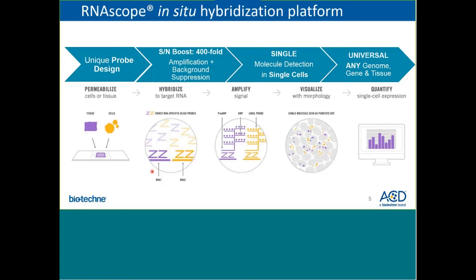The application of the tissue to the section is followed by a hybridization step, which includes hybridization of a pool of about 20 target-specific so-called double Z probes. These double Z probes target RNA and then allow for the amplification of hybridization signals via sequential hybridization of amplifiers and label probes, resulting in detection of single messenger RNA molecules in single cells as punctate dots in their morphologic context. These dots can be viewed under a standard light microscope or a fluorescent microscope, and they can also be quantitated on a cell-by-cell basis manually by counting dots or with image analysis software.